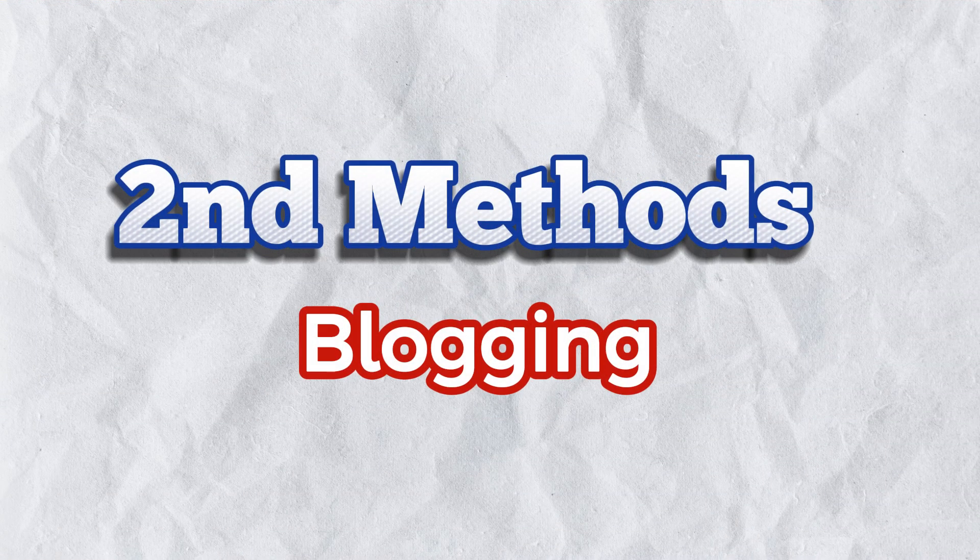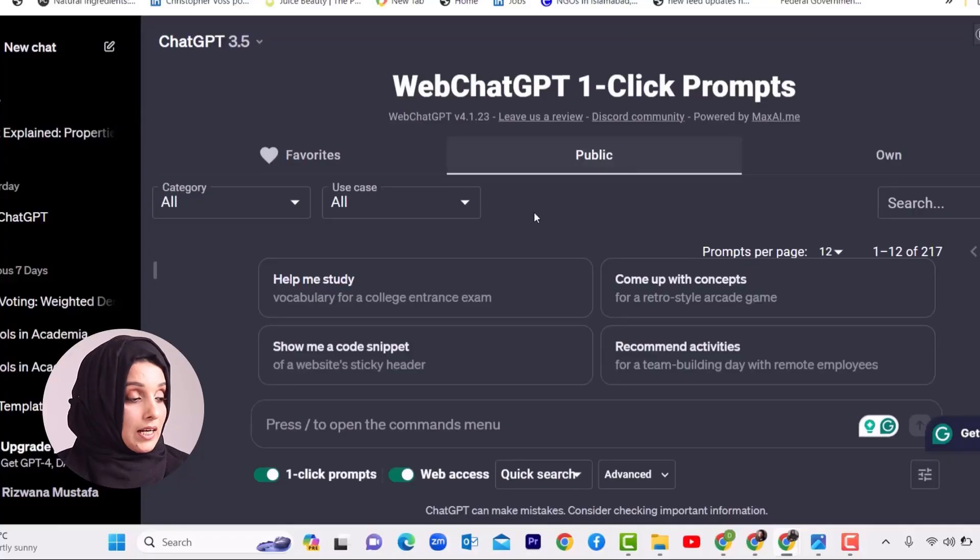The second way of earning by using AI tools is to launch your own blog using ChatGPT. You can launch a news-based blog, an information-based blog, or any kind of blog where you are educating your audience — for example, about science, technology, or machine learning. After getting some reasonable traffic, your blog will start earning from Google AdSense. People will also pay you by posting advertisements on your blog, creating multiple streams of passive income.